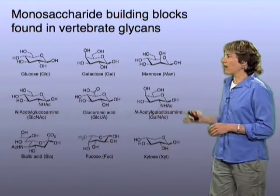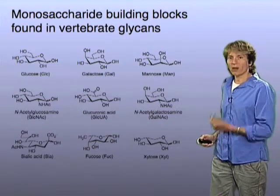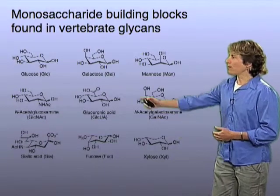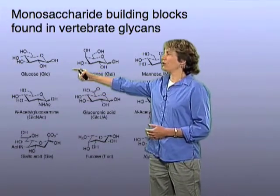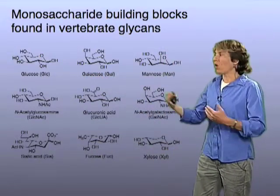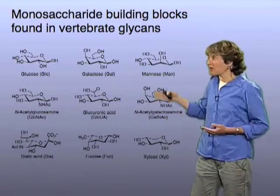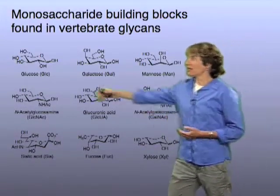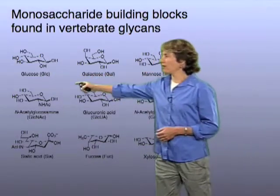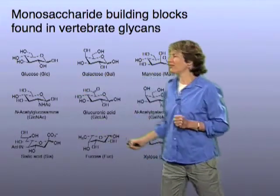Each of these monosaccharide building blocks goes by a different name, and we also have abbreviations to denote them quickly. For example, many of you are familiar with glucose. Glucose is really the parent of all the other monosaccharide units — your cells can build any of the other building blocks starting from glucose if it had to. Glucose goes by the abbreviation GLC, and we often just say 'glc' to denote glucose.